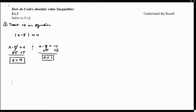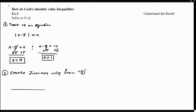Now that we know where the absolute value equals 4, we move to step two: create intervals using those results. We place 1 and 9 on a number line, which creates three intervals — the left interval (less than 1), the middle interval (between 1 and 9), and the right interval (greater than 9).